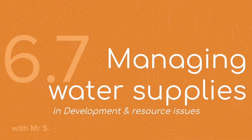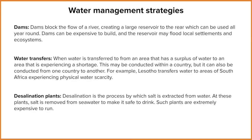Let's have a look at the hard strategies to start with. Hard strategies are ones that require a significant amount of infrastructure to be put into place and probably also cost a lot more money. The first one we're going to have a look at are dams. Dams block the flow of a river's course and allow water to build up behind the dam to create a reservoir or a large lake.